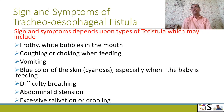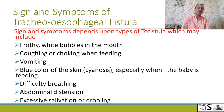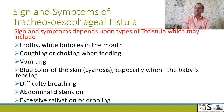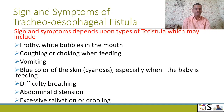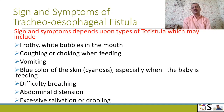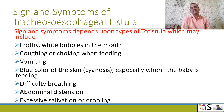If this birth defect is present, what features appear? The signs and symptoms of TEO fistula depend upon the type. Depending on the type, signs and symptoms may include: frothy white bubbles in the mouth, coughing and choking when the child is feeding, vomiting, blue color of skin especially when the baby is feeding, difficulty in breathing, abdominal distension, and excessive salivation or drooling.